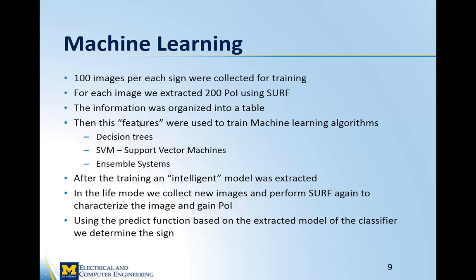For the machine learning part, we have exactly 100 images per sign collected for training purposes. For each image we extract 200 regions of interest using the SURF method. The information is organized into a table — 100 images, 200 points per image, across four traffic signs, making it computationally expensive. These large numbers of data points from the computer vision part are then input to train the machine learning algorithms.